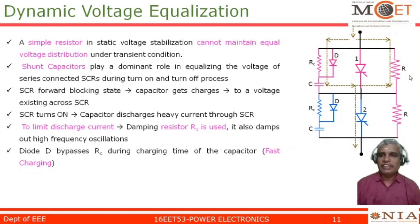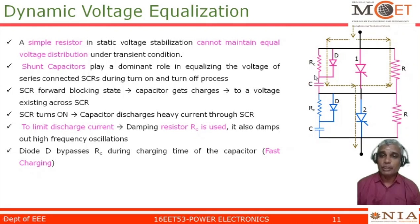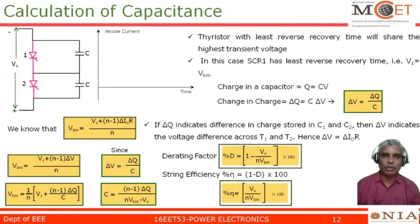We have already derived the expression for R in our previous derivation. Now these components are new to us — the very important component is this capacitor C. I am going to derive an expression for this capacitance C in order to make the voltage across the two SCRs equal during the transient condition. Let us go into the derivation and calculation of the capacitance C.